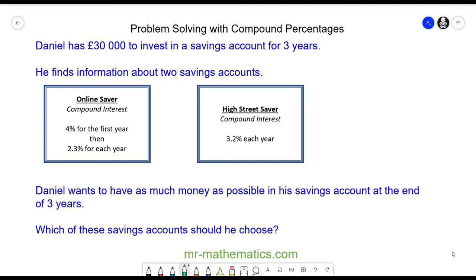Hello, in this question we're going to compare the conditions for two different savings accounts. £30,000 is invested in an online saver. In the first year the interest rate is 4%.